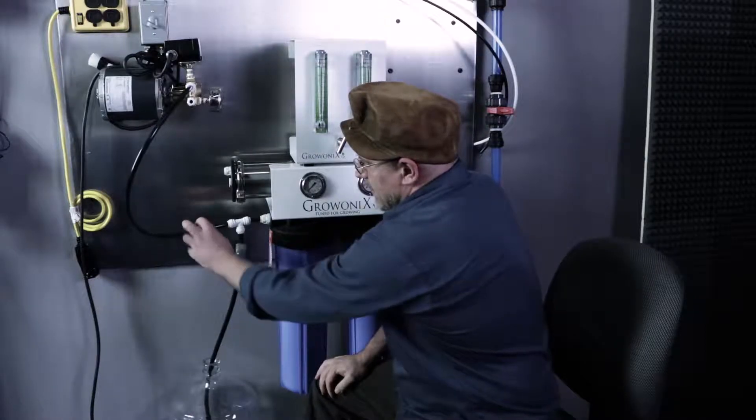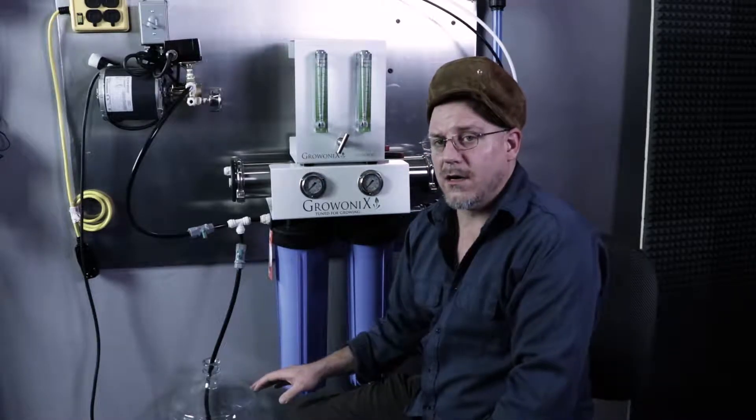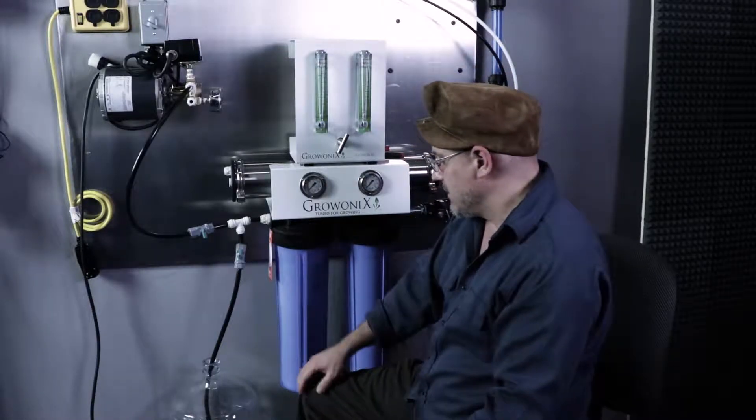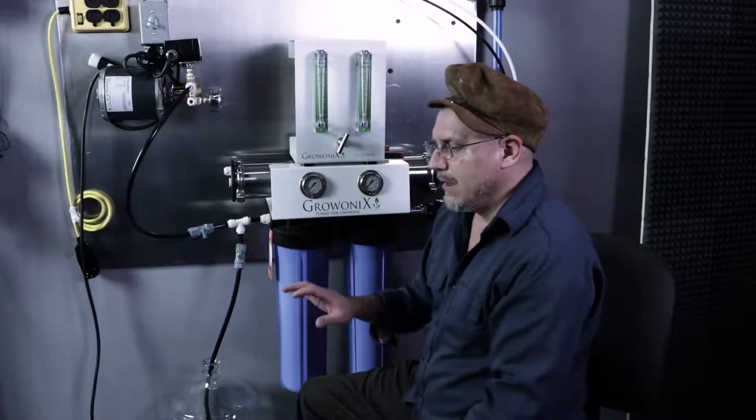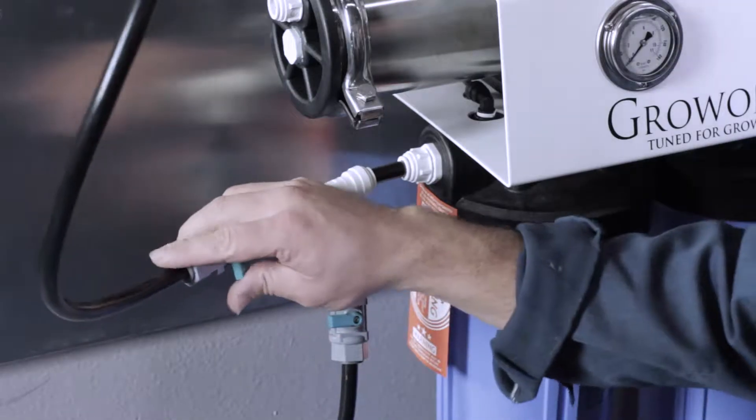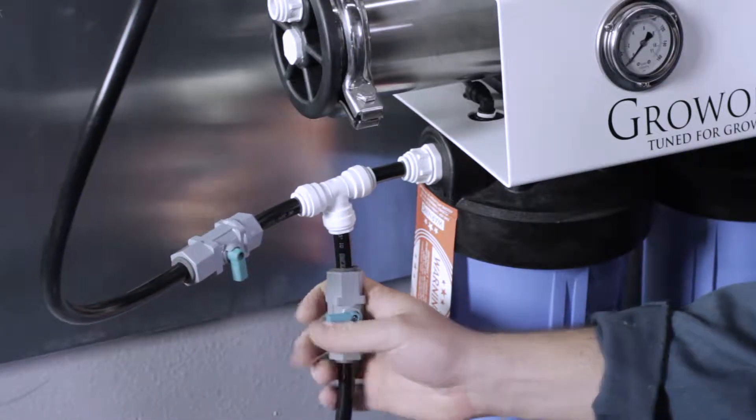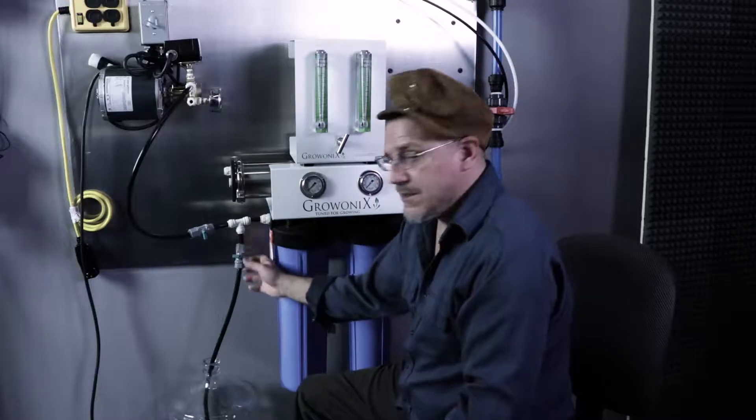So leave this valve closed, leave this one open, flush your carbon. When this water is clear, about 30 gallons of water. You could go up to 40 gallons of water with these talls until they get clear. And we're going to do that for you. And when it's done, we'll just close this valve and open this one and get ready for normal operation. But let's finish plumbing up the unit first. So let's flush that carbon right now.